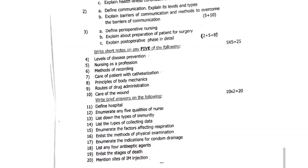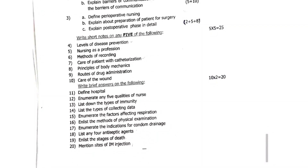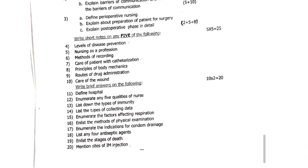Write brief answers of the following. 11th question: define hospital. 12th question: enumerate any five qualities of a nurse. 13th question: list down the types of immunity. 14th question: list down the types of collecting data. 15th question: enumerate the factors affecting respiration. 16th question: enlist the methods of physical examination. 17th question: enumerate the indications for condom drainage. 18th question: list any four antiseptic agents. 19th question: enlist the stages of death. 20th question: mention sites of IM injection.